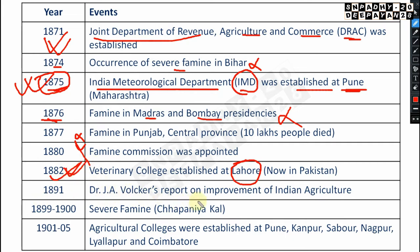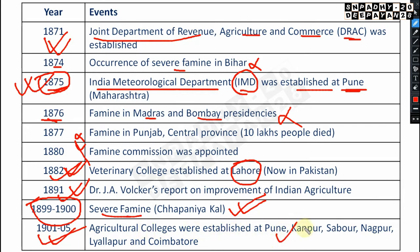Dr. J. Volker's report on improvement of Indian agriculture was given in 1891. In 1899 to 1900, there was a severe famine known as 'Chhappanya Kal' — this may come in the exam for general awareness. From 1900–01 to 1905, agricultural colleges were established at Pune, Kanpur, Sabour, Nagpur, Lailapur, and Coimbatore.